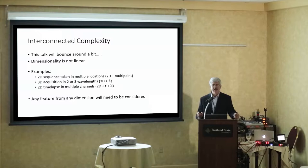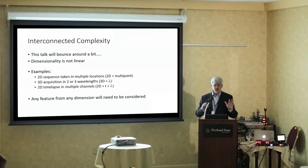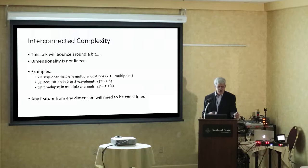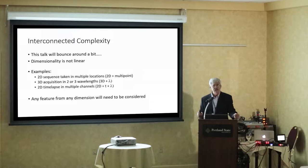Because any one problem in any one of these things is going to create a problem with your final product. The talk will bounce around a little bit because it's not linear. You can have things like 2D sequences in multiple locations — that's not exactly 3D, but it is three different dimensions. 3D acquisition in two or three wavelengths, 2D time lapse — lots of different combinations of dimensions. Any problem in any one of them is going to give us issues.